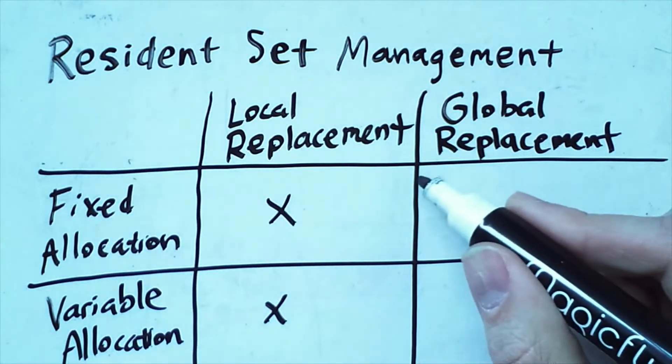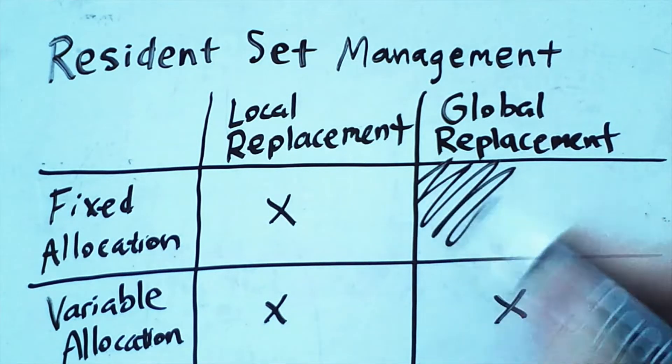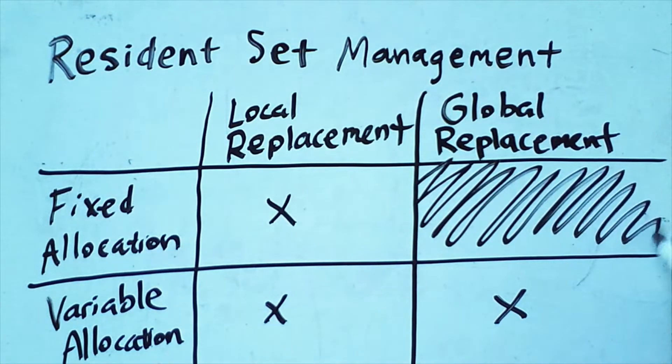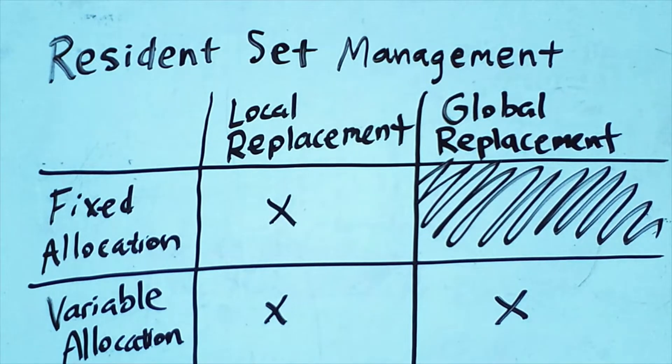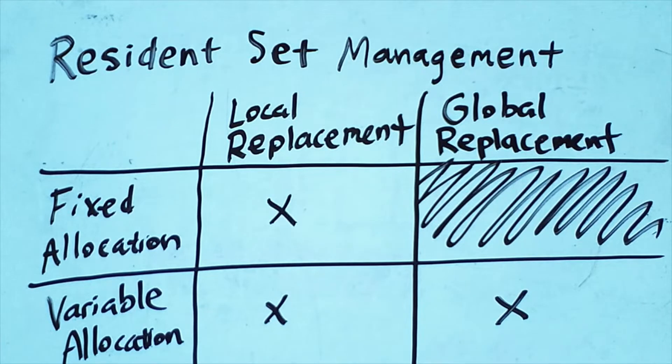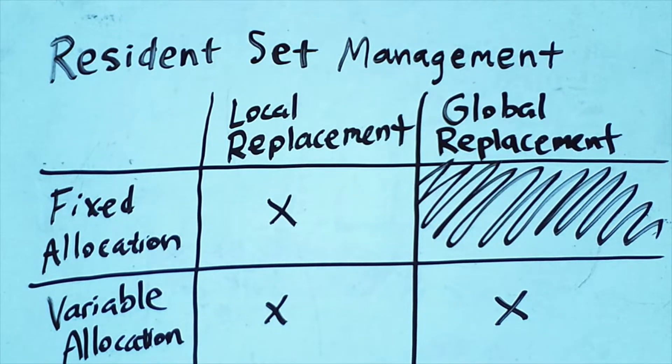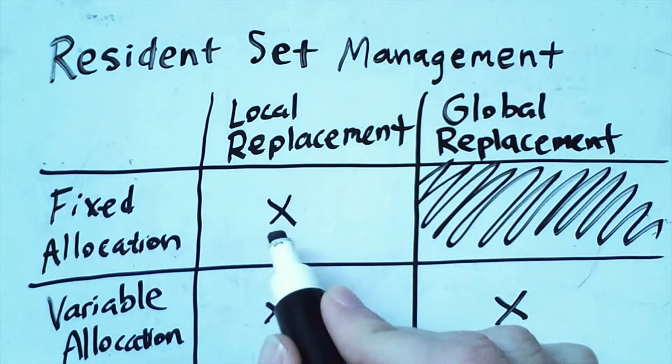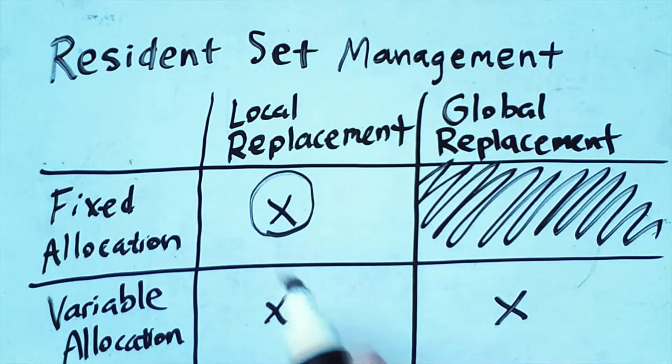It is not possible to have a fixed allocation scheme with global replacement, as this would make no sense. The previous video worked with a fixed set of frames.